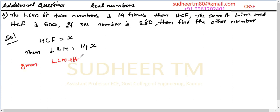LCM plus HCF is equal to 600, that is 14X plus X is equal to 600. 15X is equal to 600, which gives X is equal to 600 by 15, which is equal to 40. So HCF of our given set of numbers is 40.